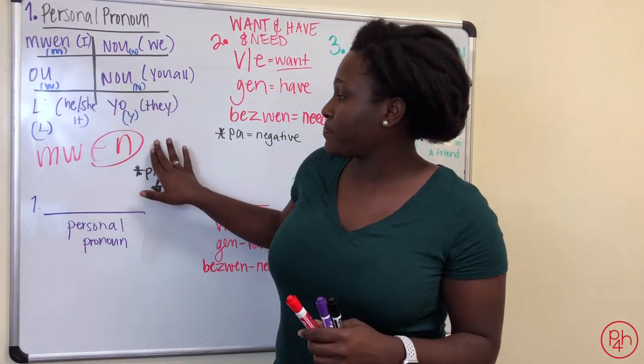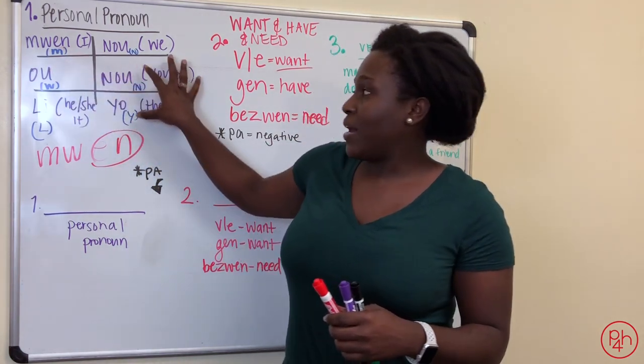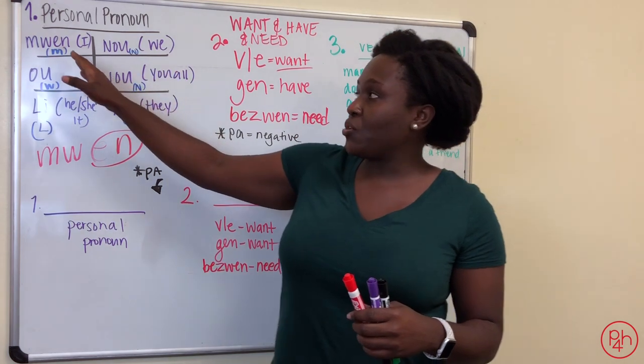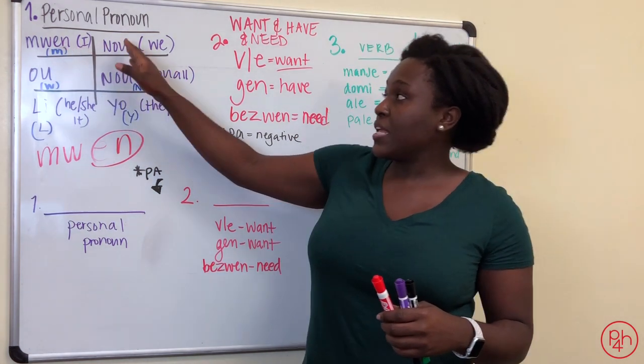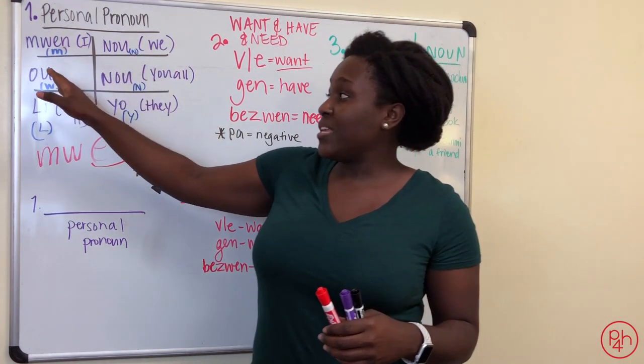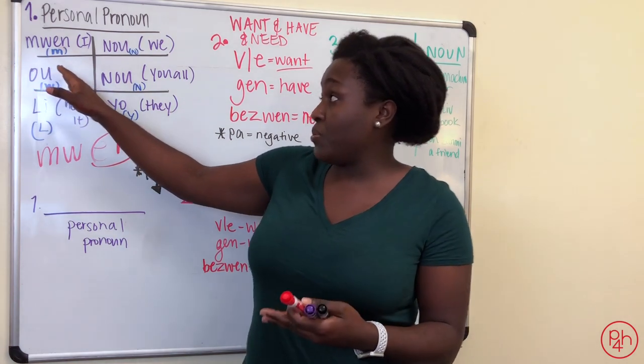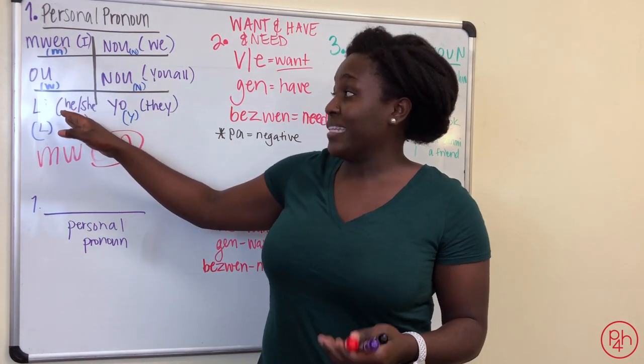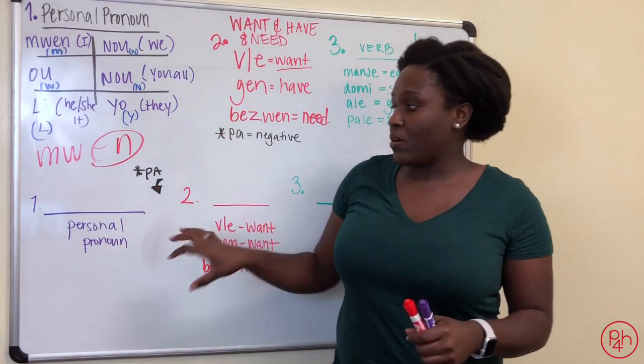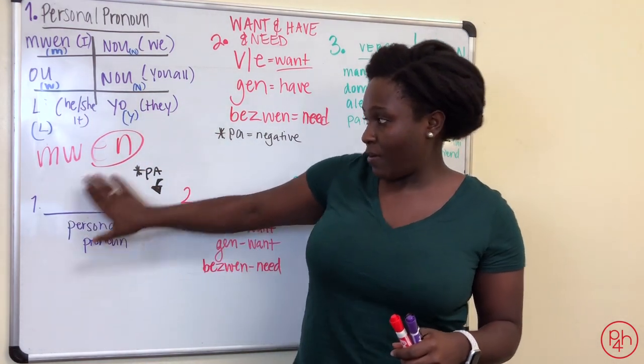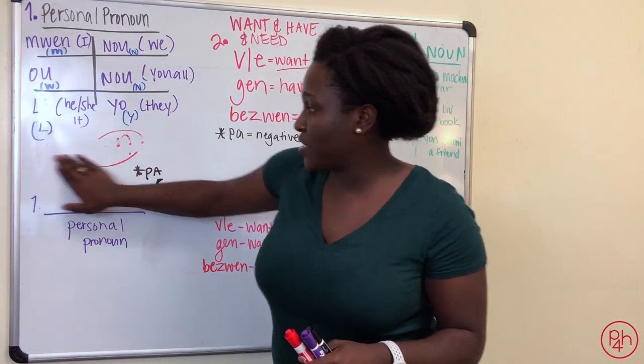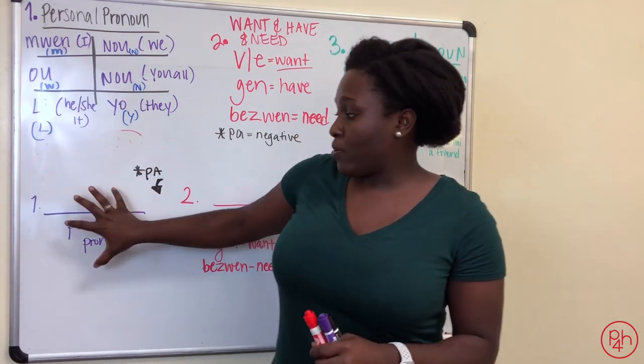Now I love this, this right here, I'm putting in this format because it shows you that the mwen, the plural version is nu, nu. The u plural version, instead of just you, it's you all. The plural version of he, she, or it, li, is yo. Now you start with a personal pronoun. All right, let me go ahead and erase that for us.